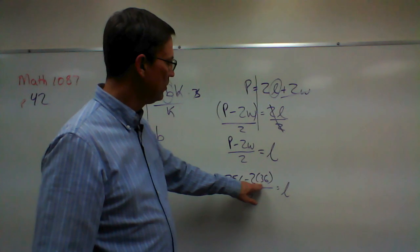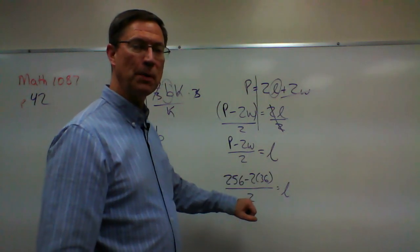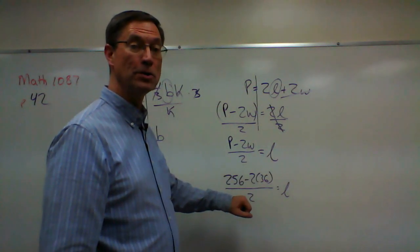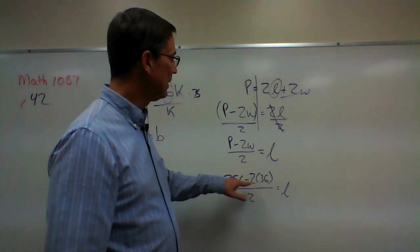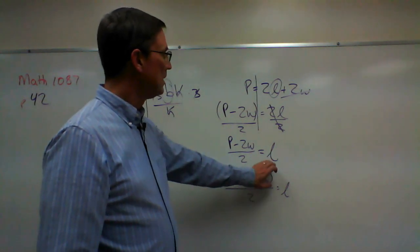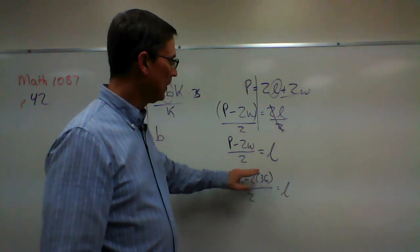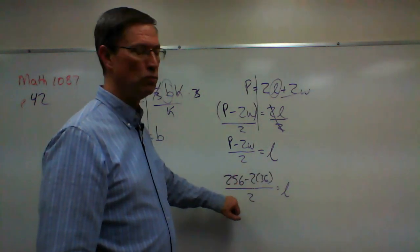So we're going to do the multiplying first, then the subtraction. Remember the order of operations: please excuse my dear aunt Sally. So we have multiplying and dividing, then subtraction. Then once we've simplified the top, then we do the last step, which is divide by two.